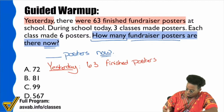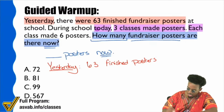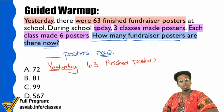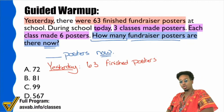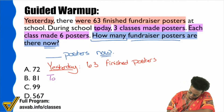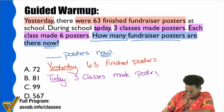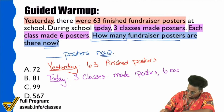Next up, it says 'during school today' — look at that, today — 'three classes made posters,' and 'each class made six posters.' Let's write that down in purple: today, three classes made posters, and each class made six posters — so six each.